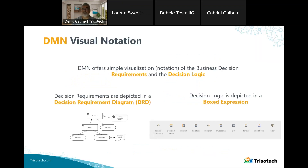In DMN, the decision requirements are depicted in what we call the Decision Requirement Diagram, which is a visual way of organizing the dependencies between the decision, sub-decisions, and the various data you're using. We also depict the actual decision logic using what's called box expressions, and we have a whole set of different box expressions we can use in capturing the logic.